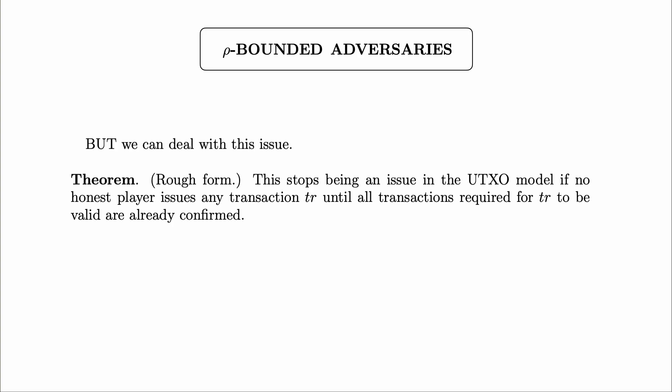The problem with the payment circle is really that we have these nested sequences of transactions passing the unit of stake around the circle, and honest players are issuing transactions in these nested sequences before previous elements have been finalized. What we can show is that things won't be so problematic if honest players wait to finalize transactions before issuing a new transaction tr — they basically wait for all transactions that tr relies on to be finalized. This stops being an issue in the UTXO model, like Bitcoin's, if no honest player issues any transaction tr until all transactions required for tr to be valid are already confirmed. That's everything I'm going to go through in this sequence of videos — I very much hope you enjoyed it.